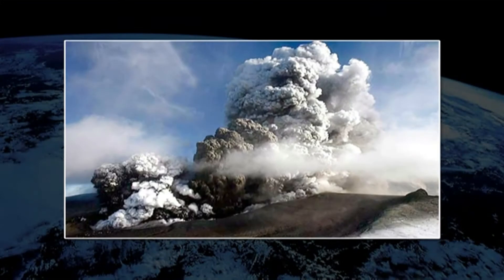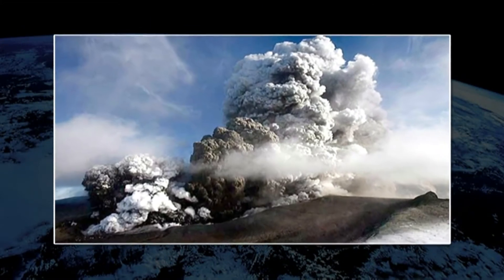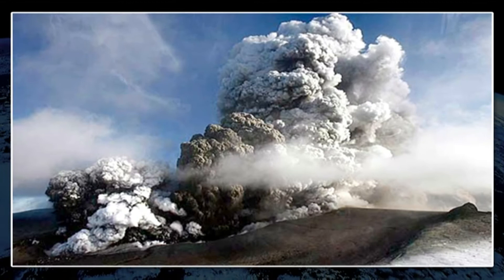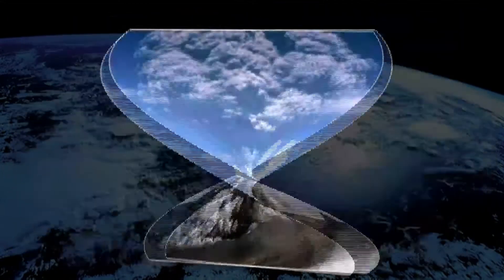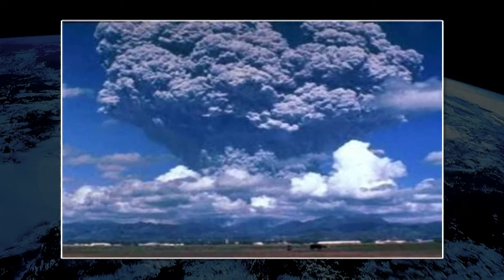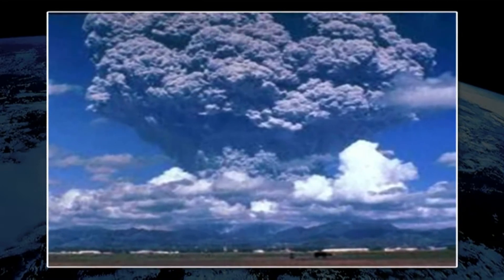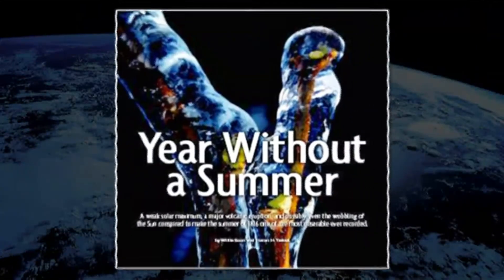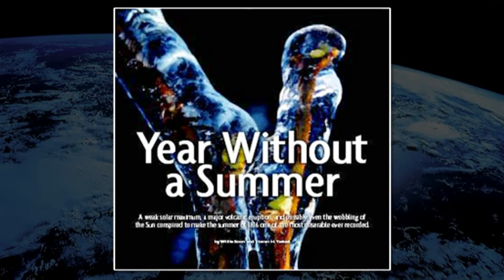Winds in the stratosphere carry the aerosols rapidly around the globe in either an easterly or westerly direction. Mount Pinatubo in the Philippine Islands erupted in April 1991, emitting thousands of tons of gases into the atmosphere. Another striking example was in the year 1816, often referred to as the year without a summer.